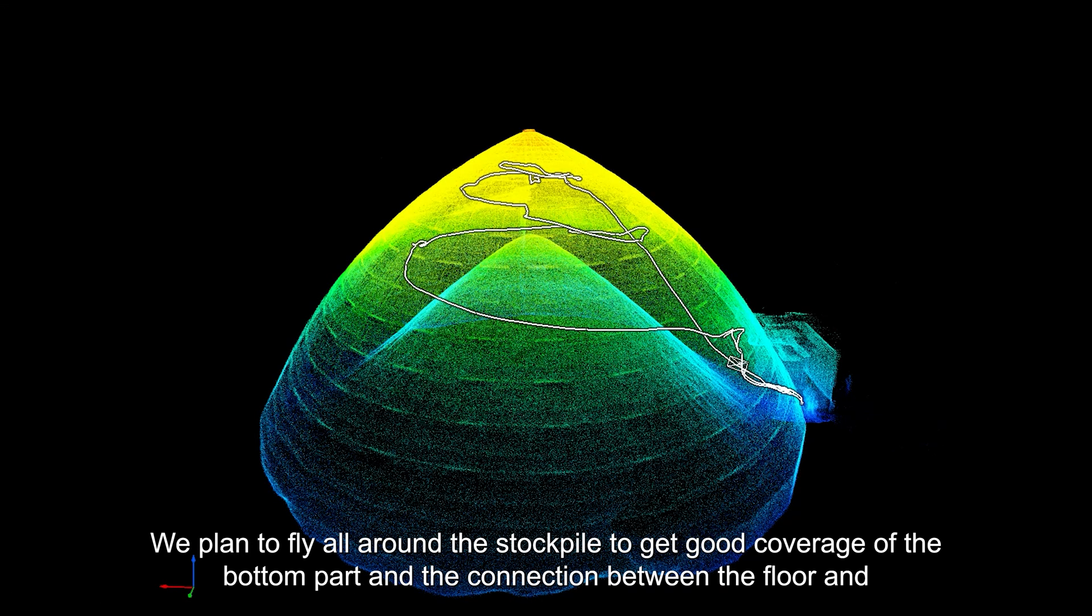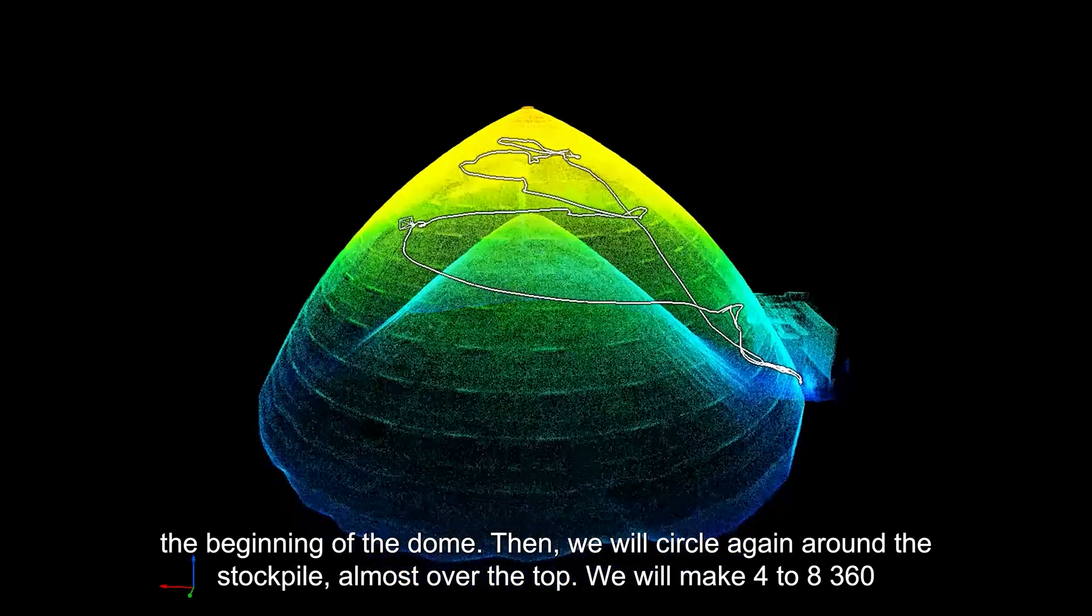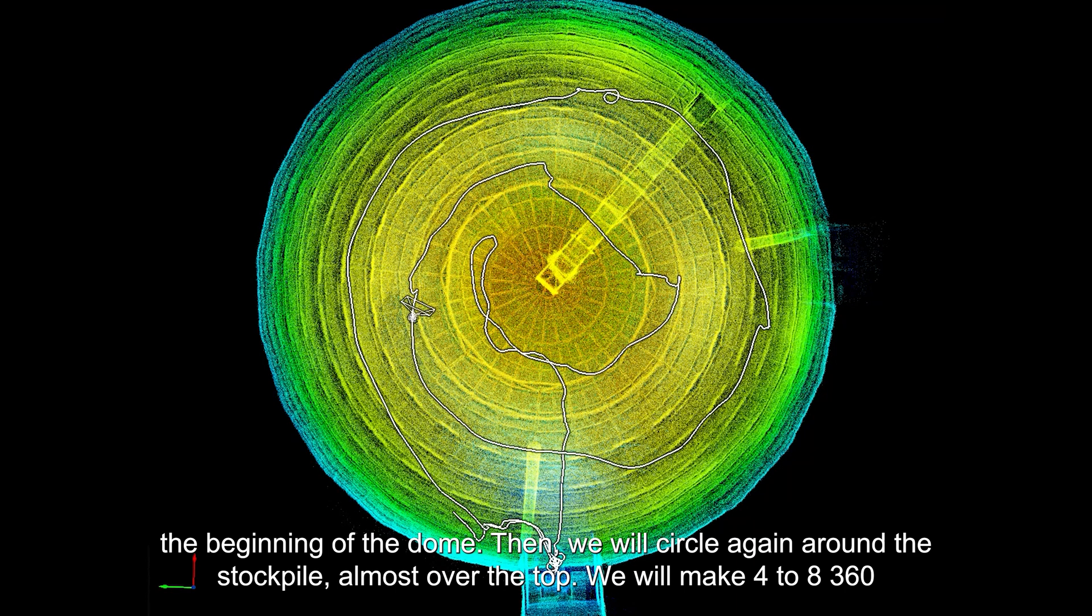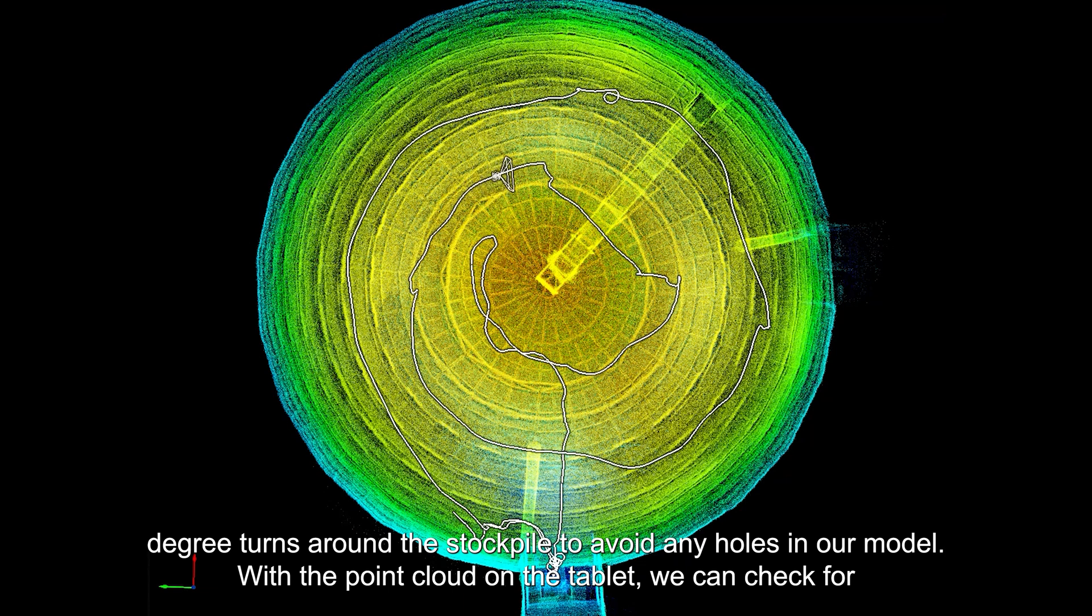We plan to fly all around the stockpile to get good coverage of the bottom part and the connection between the floor and the beginning of the dome. Then, we will circle again around the stockpile, almost over the top. We will make 4 to 8 360-degree turns around the stockpile to avoid any holes in our model.